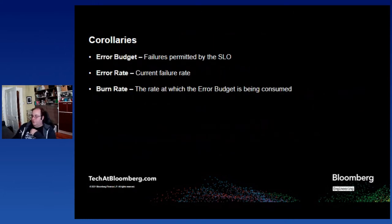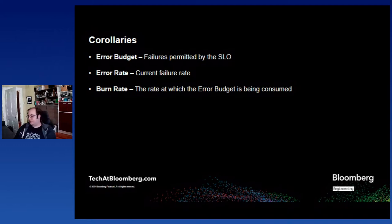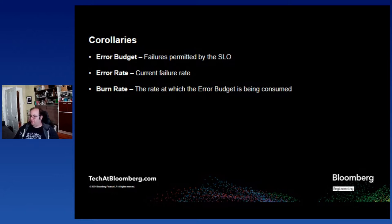Let's look at some corollaries here. If we have an objective, then we have some amount of allowed errors, and that's our error budget. It may be quite small, but it is non-zero. We also have some rate at which our application is failing at the moment — that is our error rate. And then the rate at which that error budget is being consumed by the error rate is our burn rate.